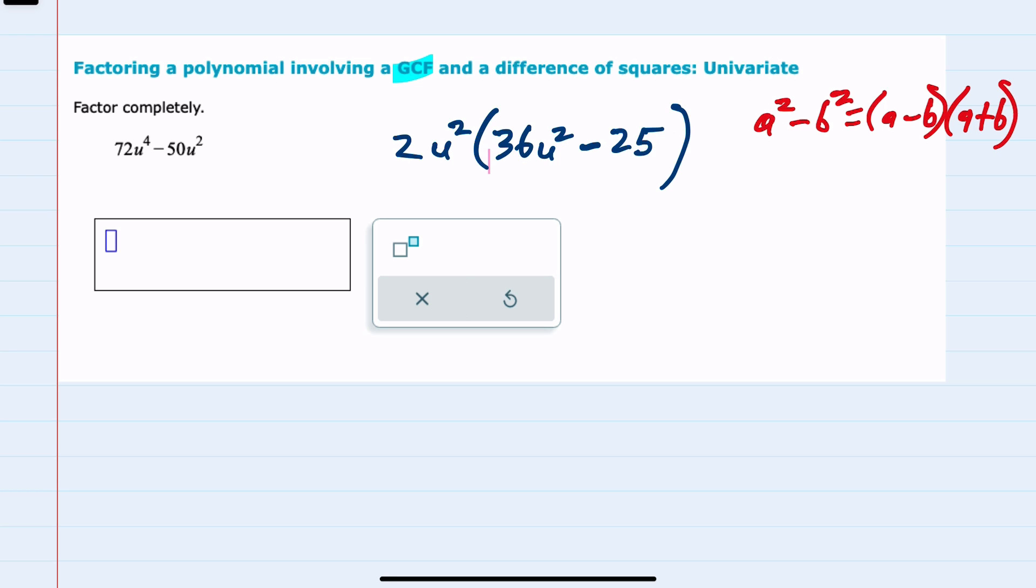Before I do this factorization, I want to rewrite it so that I actually have it written as a perfect square minus a perfect square. And so to do that, the 36u squared I'm going to write as a 6u quantity squared, and then the 25 is a 5 squared.